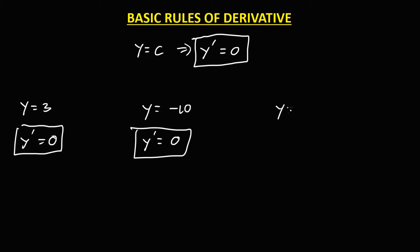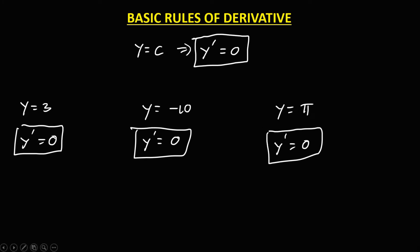And for y equals pi — since pi is a constant — y prime is always equal to 0. So again, the derivative of a constant is equal to 0.